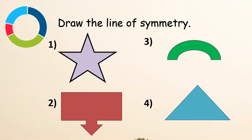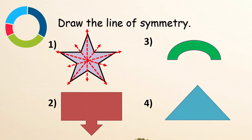Help me draw the line of symmetry for each shape. Let's start with number one — we can draw the line of symmetry in many ways. It can be that way, or that way too, and there's one more. How about number two? We only have one way — in the middle. We can draw the line of symmetry in the middle. Number three — in the middle too. And number four — in the middle too.